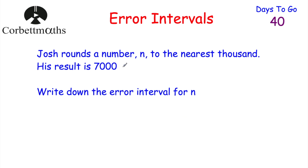Here's a question now for you to try. Josh rounds the number N to the nearest thousand. He has this number N and rounds it to the nearest thousand. His result is 7,000. Write down an error interval for N. Feel free to press pause now to try this question.